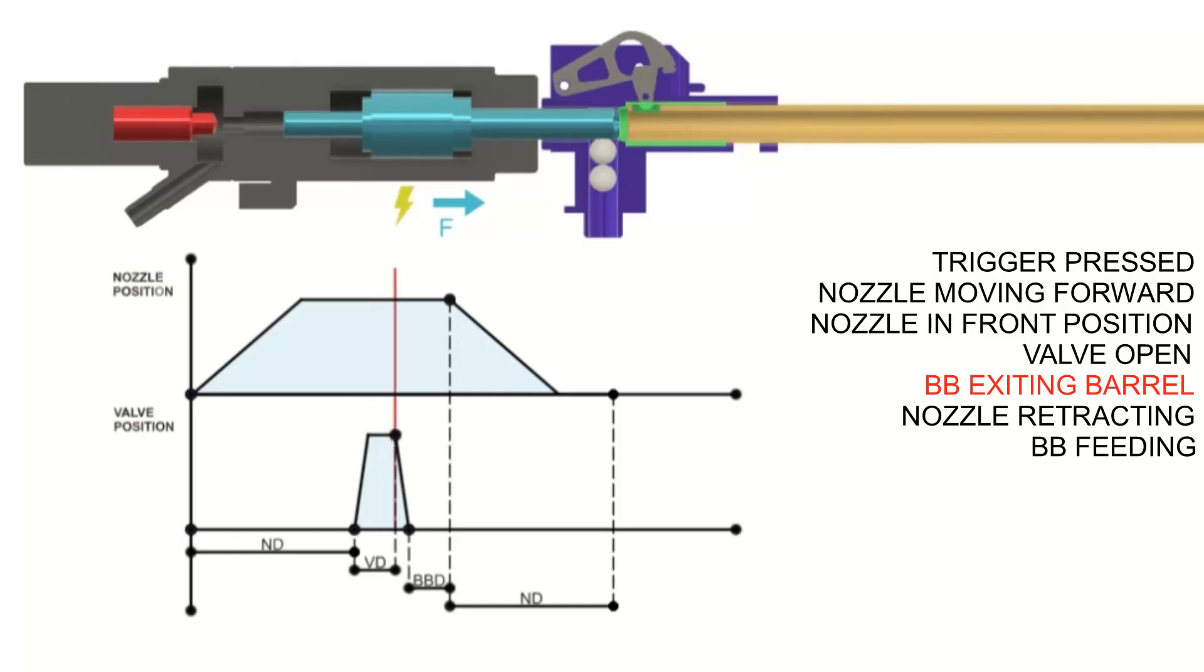After valve dwell timer expires, valve coil is turned off and piston starts to close. At this point BB dwell timer is activated because the BB is still in the barrel and waits for the BB to exit the barrel.